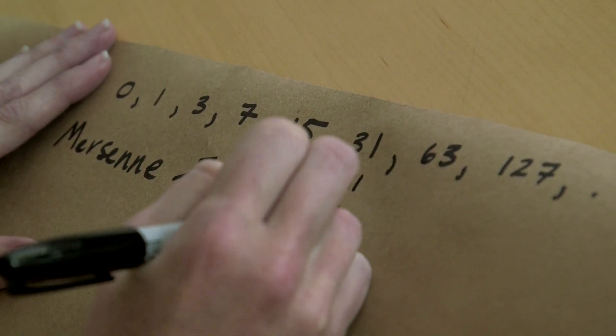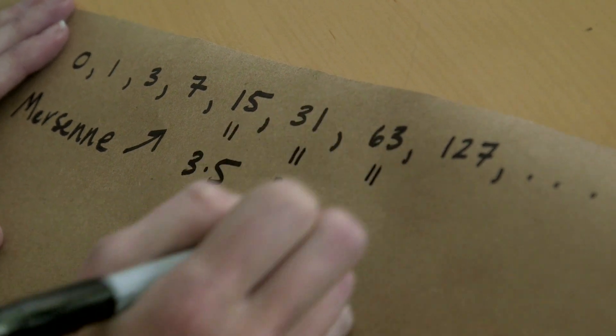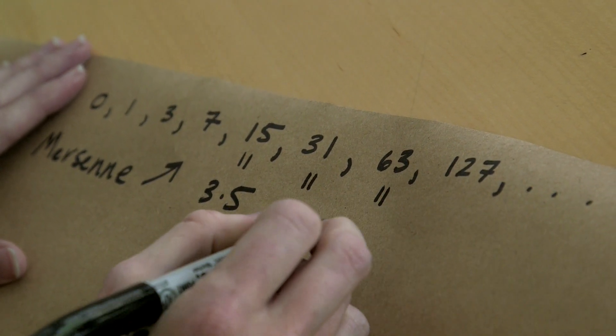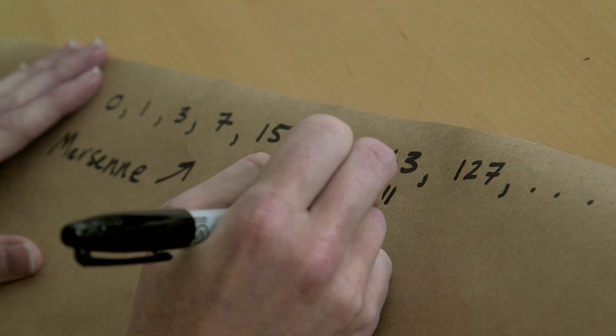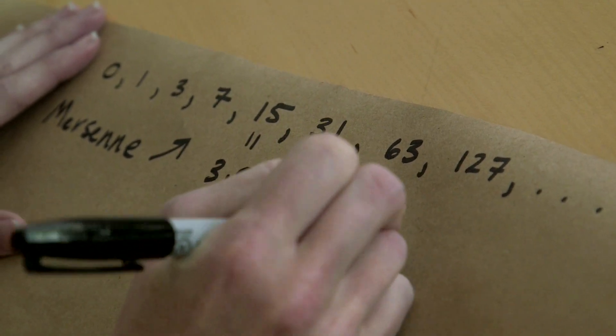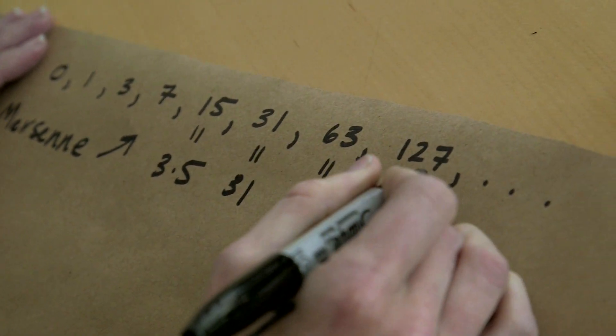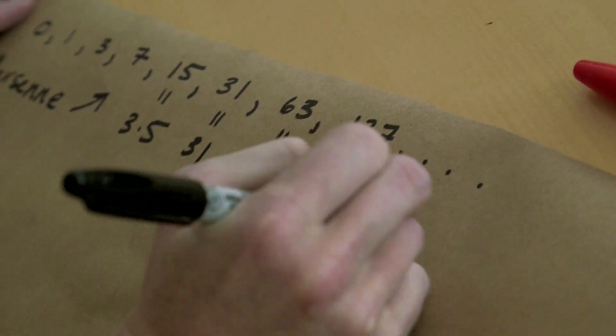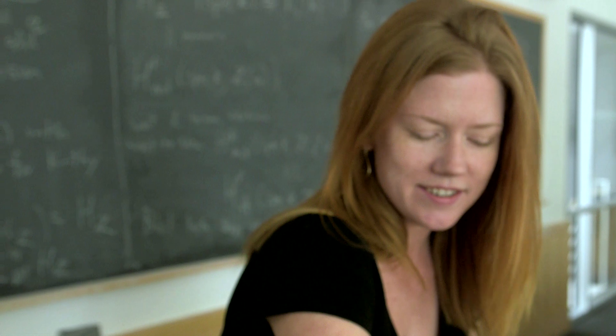But 15, this is 3 times 5. 31, that's already prime. 63, well, let's see, so 7 is a prime divisor, and 9 is a divisor, but it's not prime. It's actually 3 times 3 times 7. And 127, let's see, I think that's prime, and so on. Anyway, so this is what I mean by prime divisors.